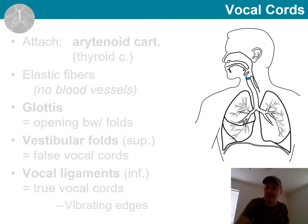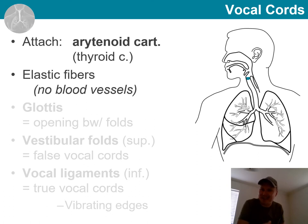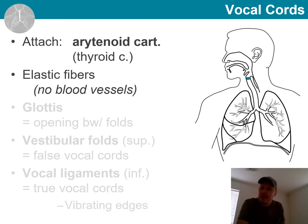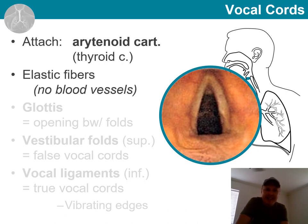Vocal cords are located deep to the laryngeal mucosa, attaching to the arytenoid cartilages. What is interesting is that these vocal cords appear white because the elastic fibers they are made of do not have blood vessels in them — hence the color. On this view, acquired with a technique called laryngoscopy, we actually see these white structures made of elastic fiber.